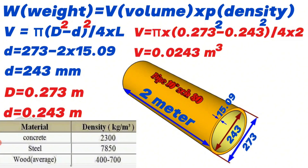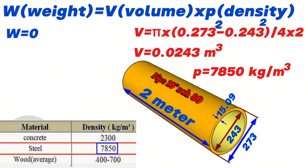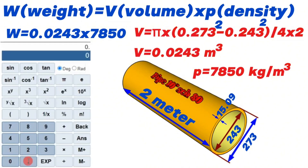Now let's look at the chart showing the density of iron material. In this chart, iron steel density of 7,850 kg per cubic meter is shown. Now let's write this information into the weight calculation formula. Weight equals volume 0.0243 cubic meters multiplied by the density of the material, 7,850 kg per cubic meter. Using the calculator, we find that 0.0243 multiplied by 7,850 equals 190.